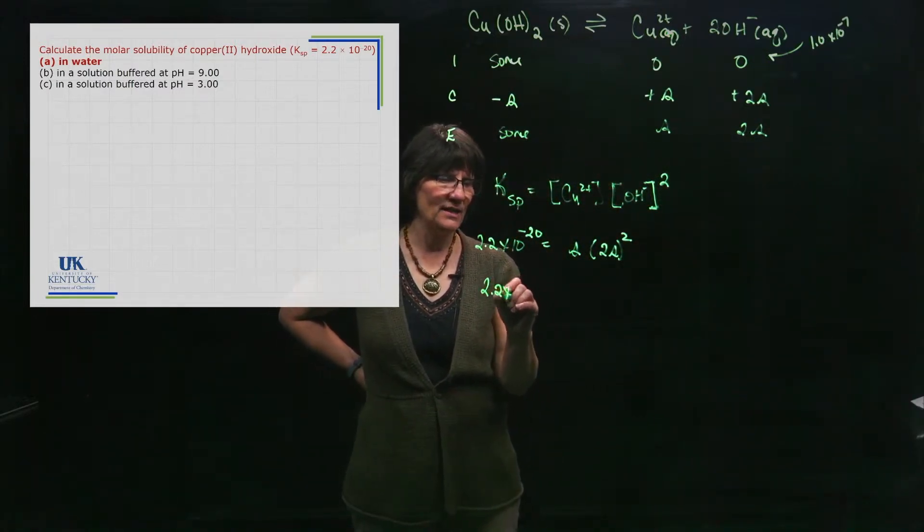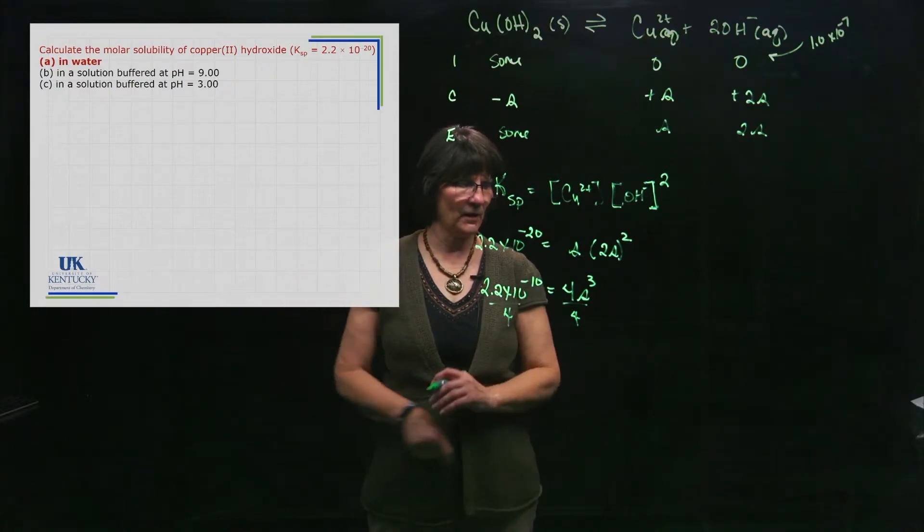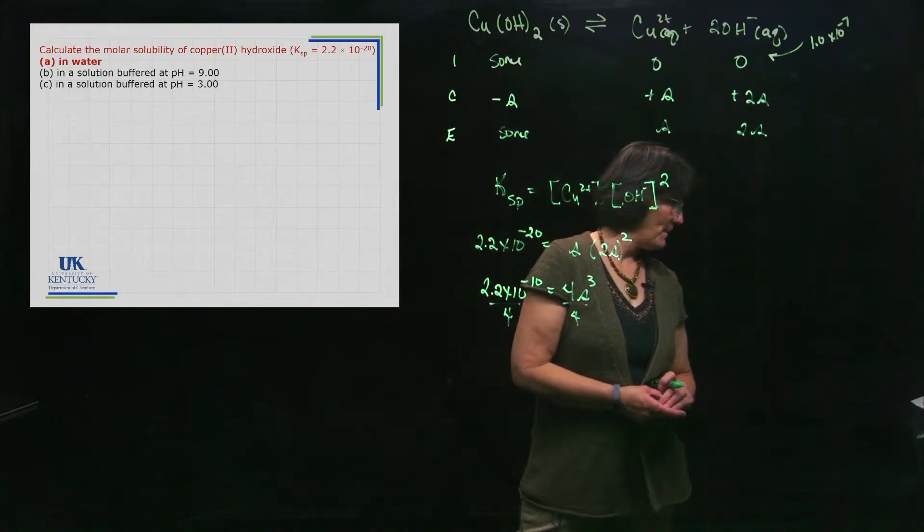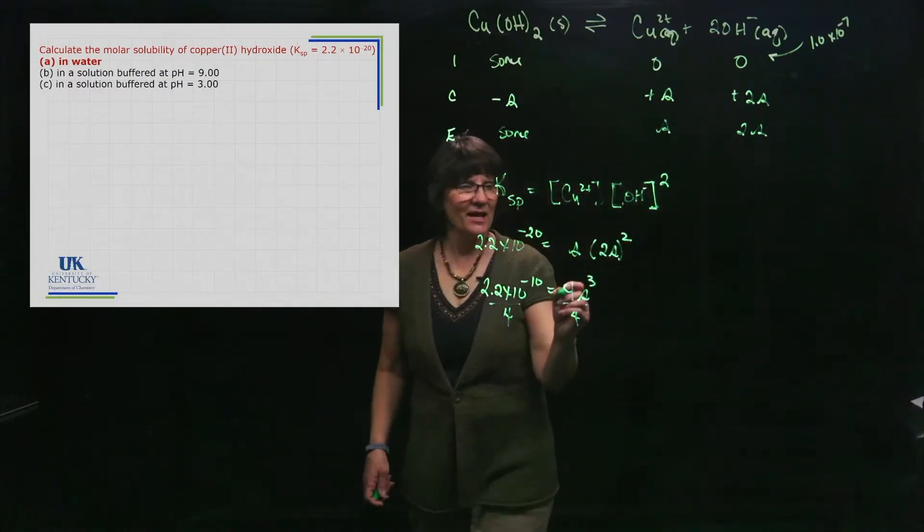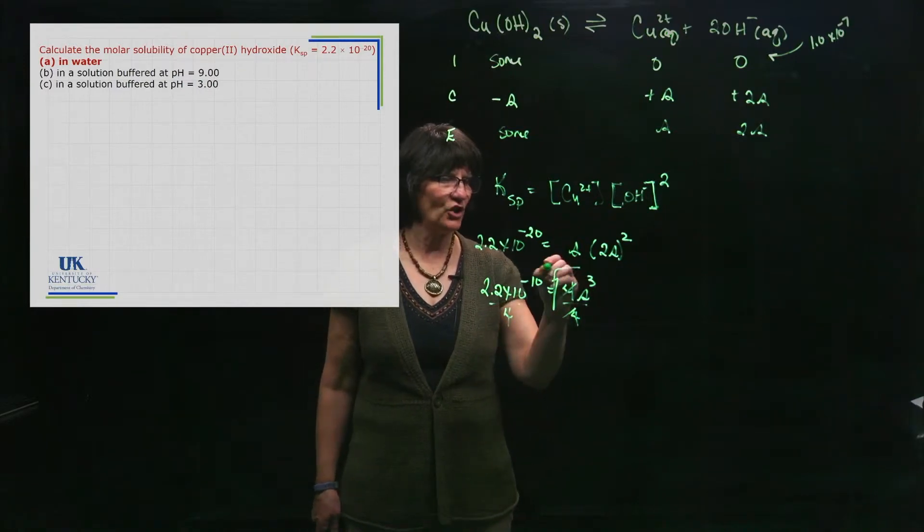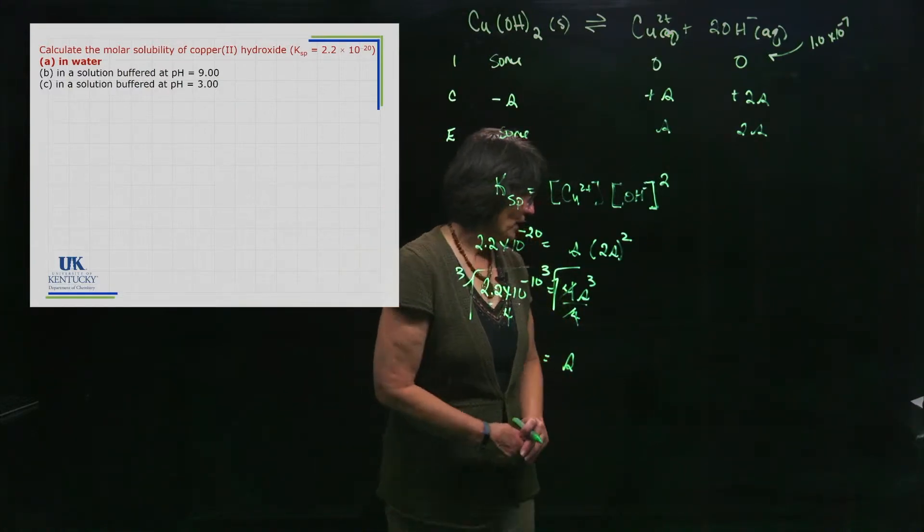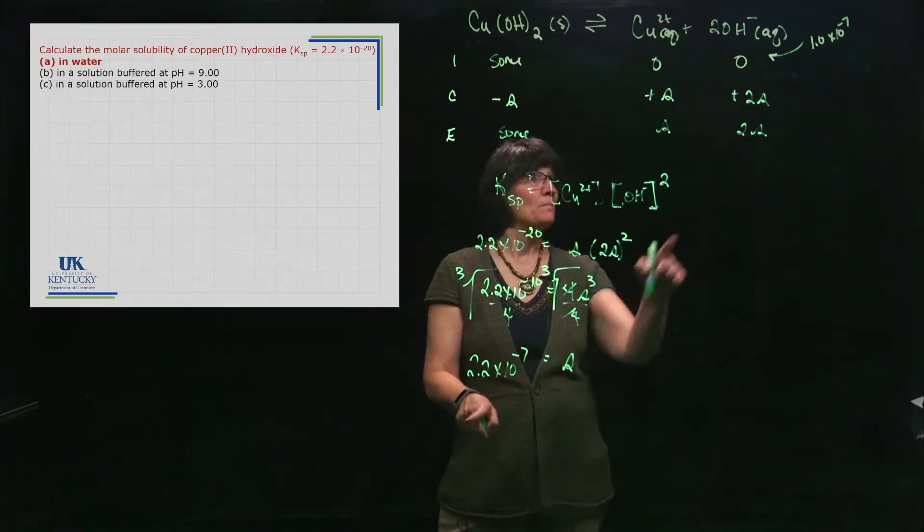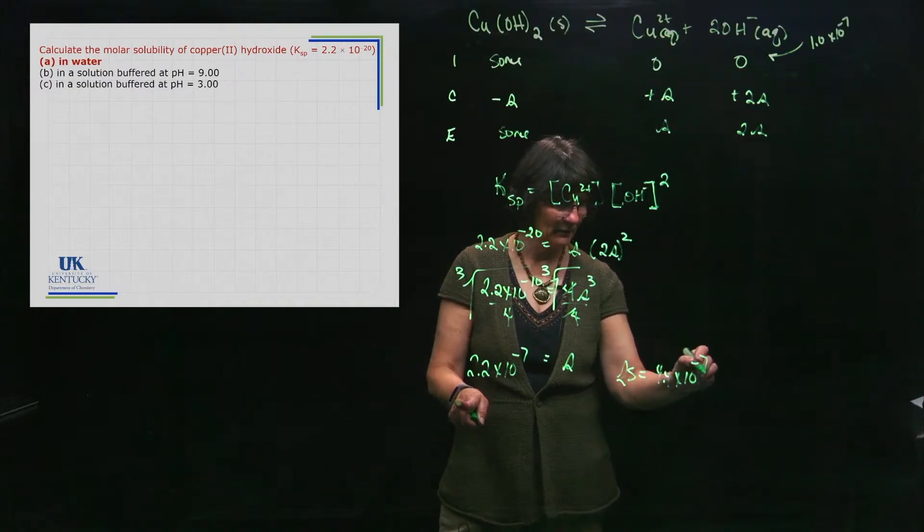2.2 times 10 to the minus 20 is equal to 4s cubed. We divide both sides by 4, and then we take the cube root of it. So divide both sides by 4, that gets the 4 over here. Then I took the cube root. Once I divided by 4, I took the cube root, and this gave me an s value equal to 2.2 times 10 to the minus 7. And 2s would be twice that number, right? It'd be 4.4 times 10 to the minus 7.